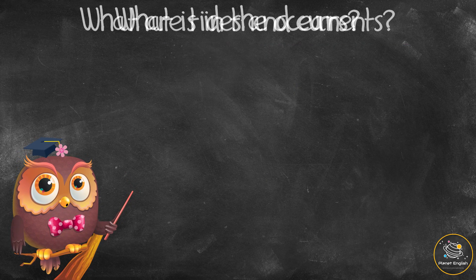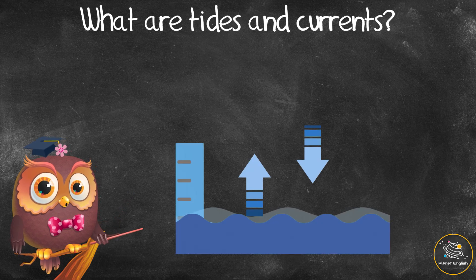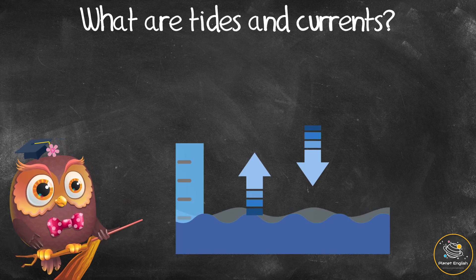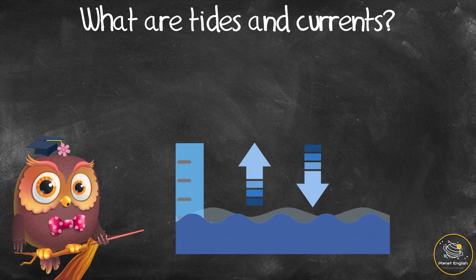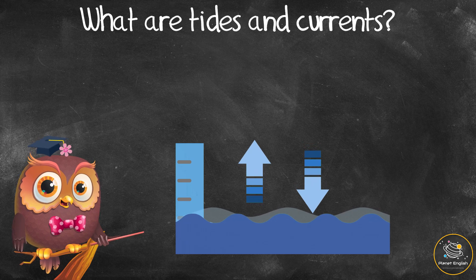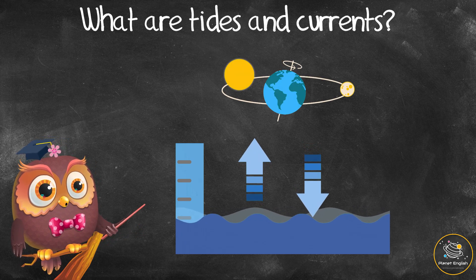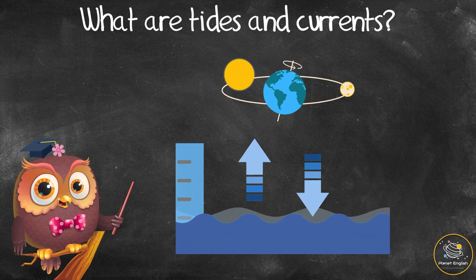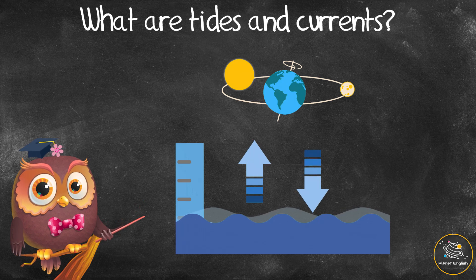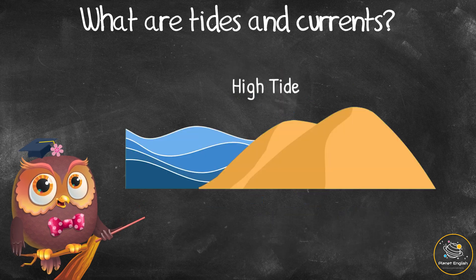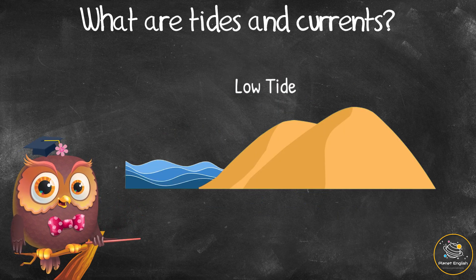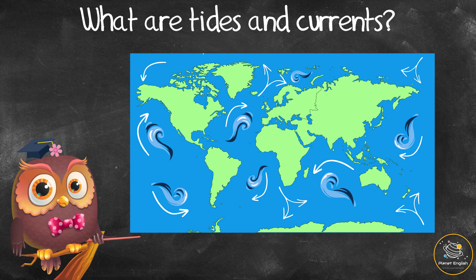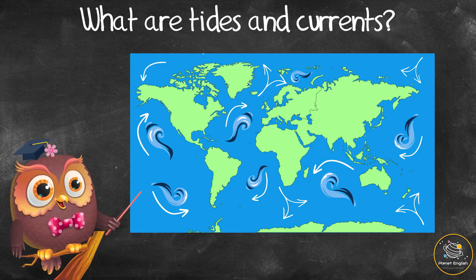What are tides and currents? The levels of the oceans rise and fall twice every day — these are called tides, which are caused by the gravitational pull of the moon and the sun and the rotation of the Earth. The highest level is called high tide and the lowest level is called low tide.